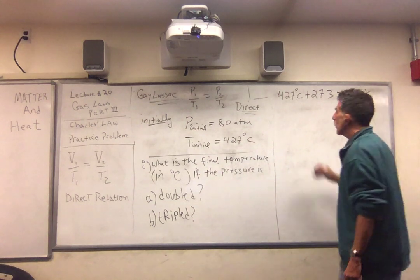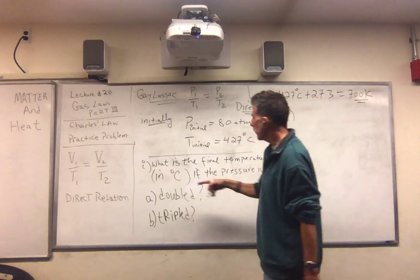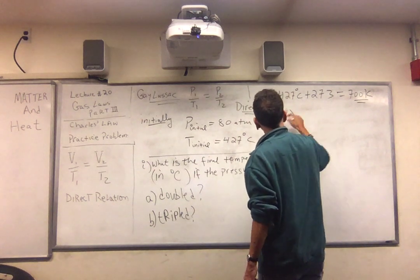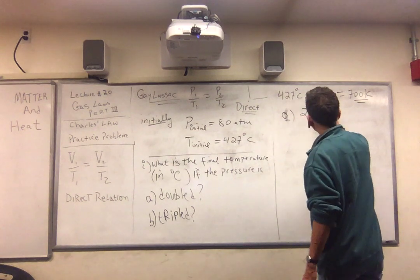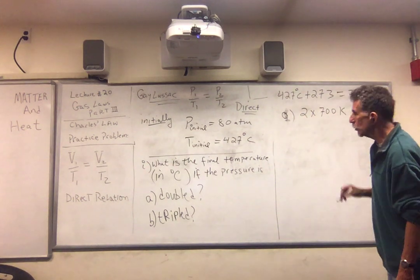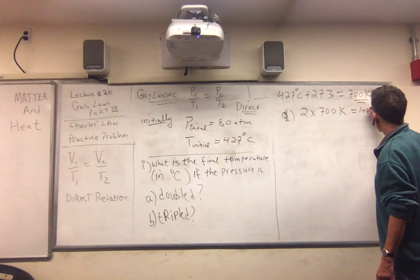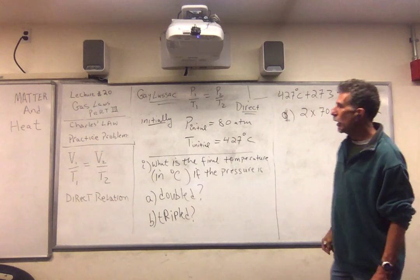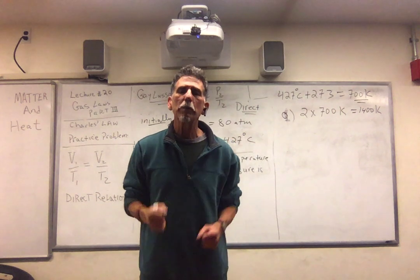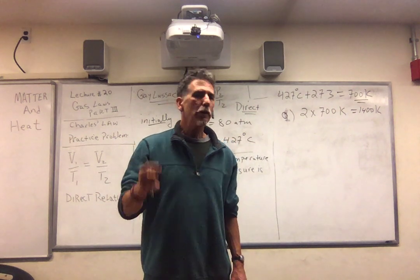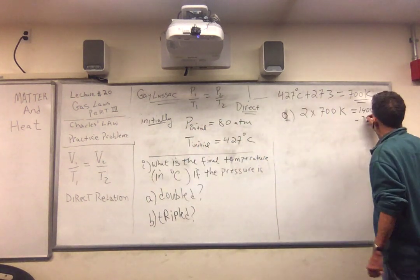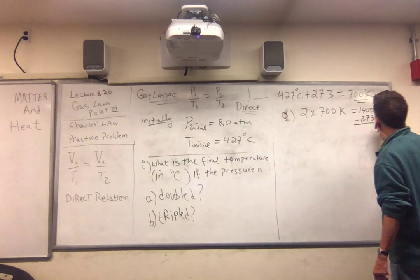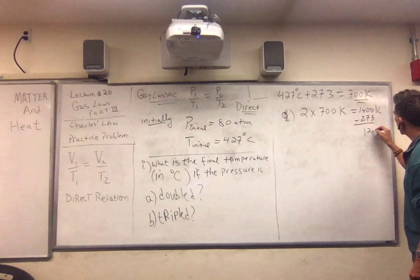Part A: what is the final temperature in degrees Celsius if the pressure is doubled? We're doubling the temperature — all calculations in Kelvin. Two times 700 is 1,400 Kelvin, and we want the answer in degrees Celsius. Subtract 273 — come on, do it in your head. That's 1,127 degrees Celsius. I think that's the answer.